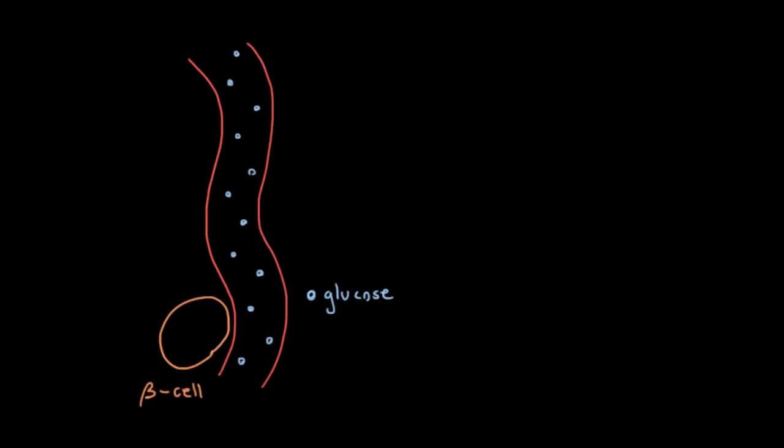Release insulin into the blood. So they put insulin out into the blood, and this insulin tells certain cells in your body to take up the glucose and store it. And here is such a storage cell, and it is going to take up the glucose because there's insulin in your blood.